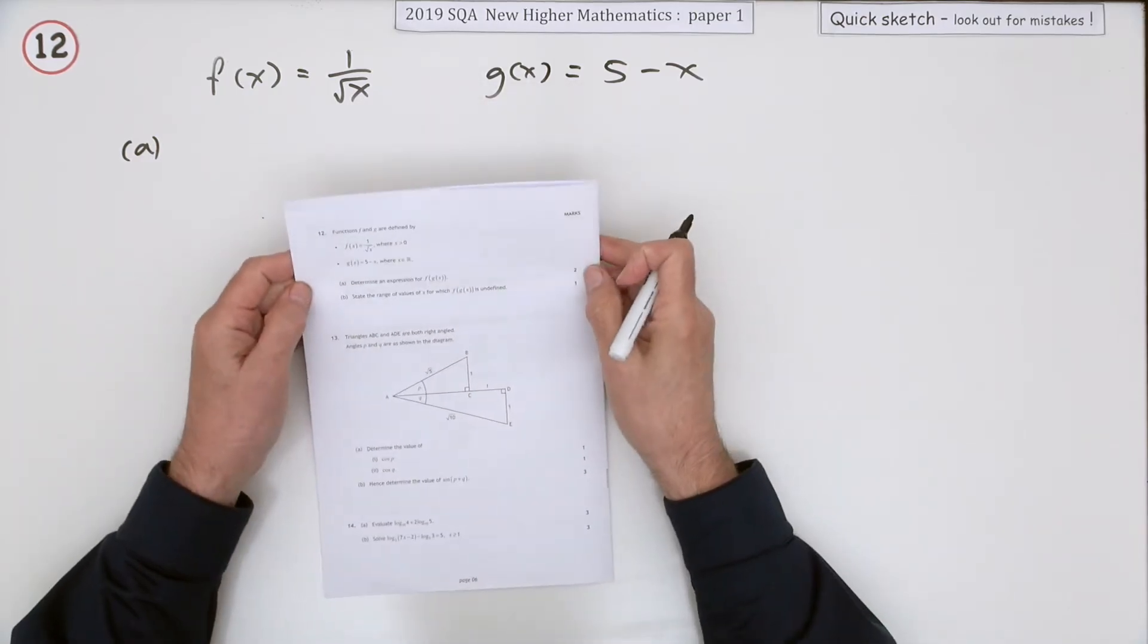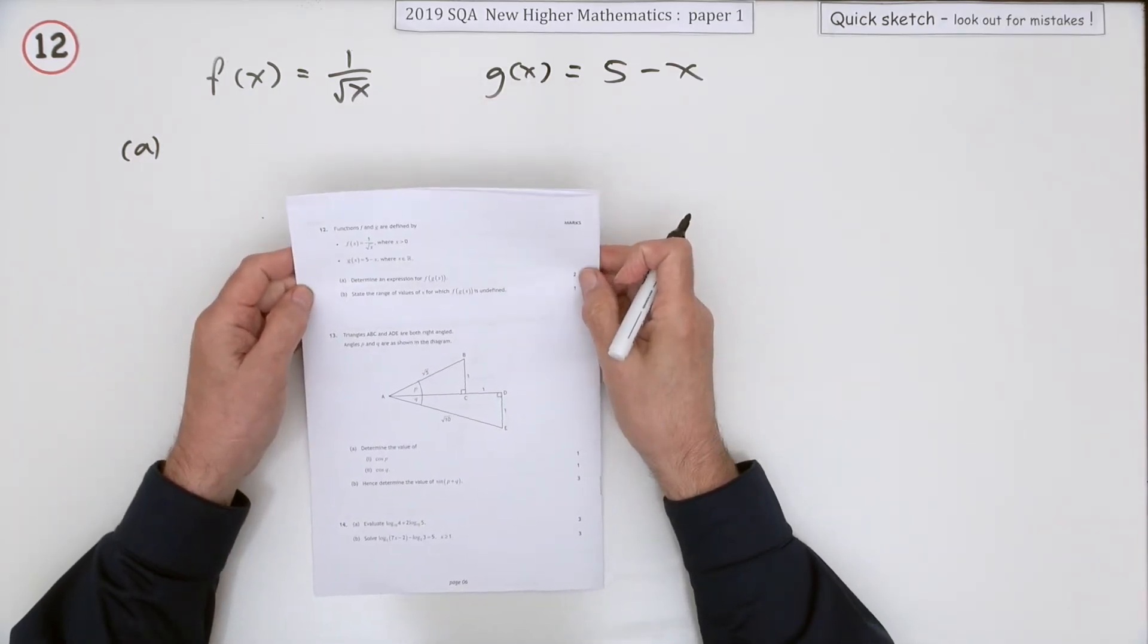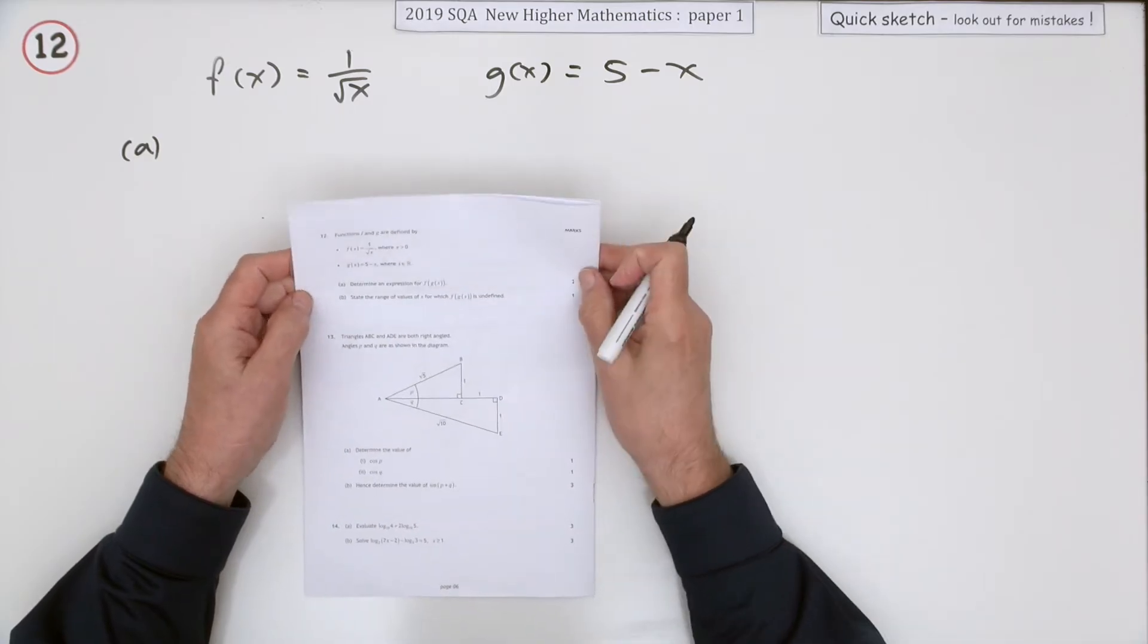Number 12 from the 2019 Higher Maths Paper 1. Back to a 3 mark question on functions of functions.